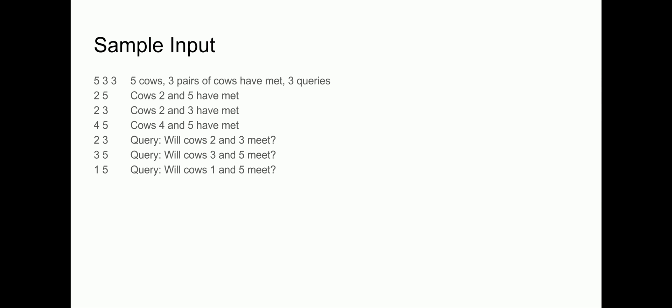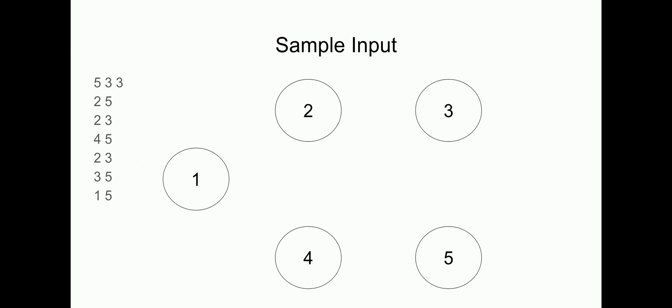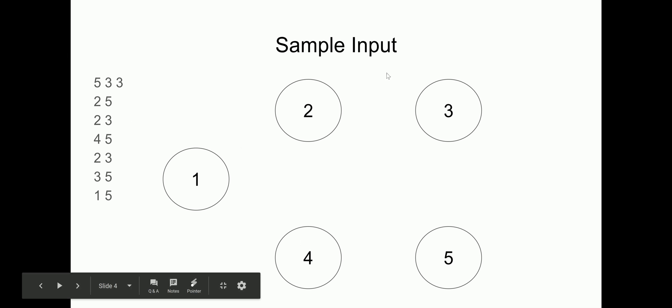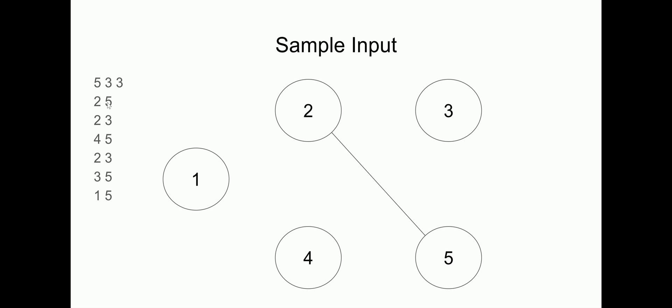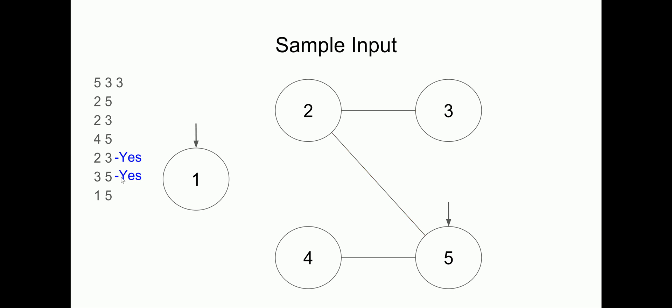A nice way to visualize this problem is to think of it as a graph. Every cow is a node, and every two cows that have met create an edge. In the sample input we have five nodes. We add edges for each pair that has met. For our first query, there is already an edge between cows two and three, so yes, they will meet. For cows three and five, both have met cow two, so yes they will meet. For cows one and five, there is no cow that both one and five have met.